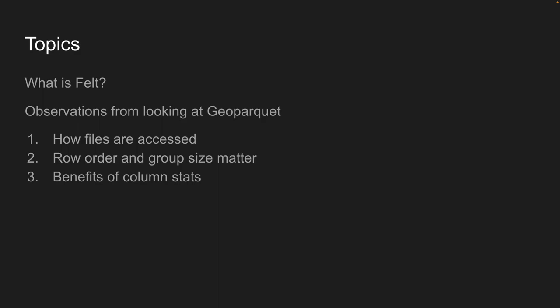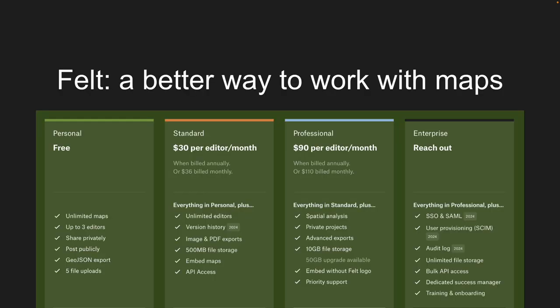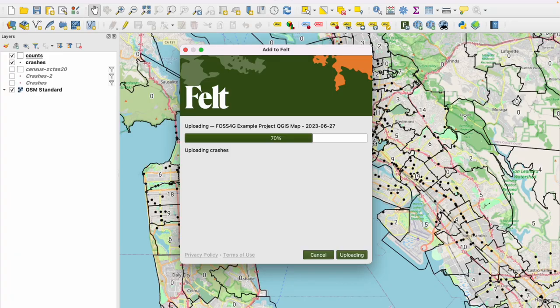What is Felt? We're an in-browser way to work with maps — a commercial product that charges money for in-browser GIS-type things. A typical use case: you might be a QGIS user using the Felt plugin to upload data. Once in Felt, you can do traditional GIS interactions, bring in things like zip codes, share and collaborate, comment, draw freehand on maps, and drop in media such as photos.